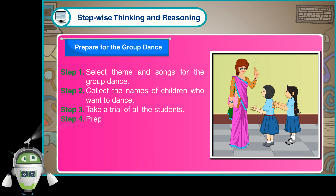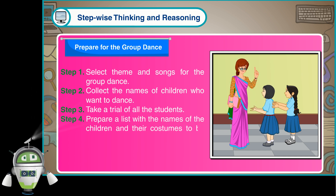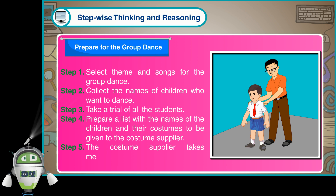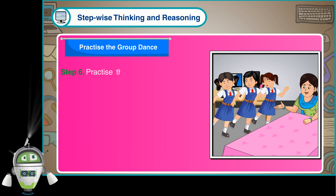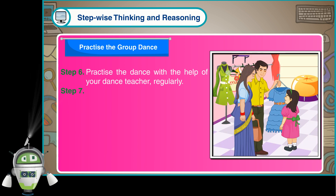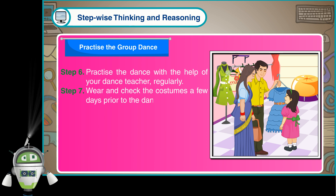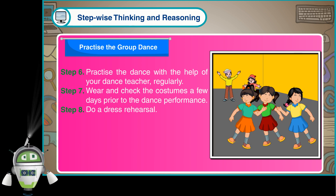Step 4: Prepare a list with the names of the children and their costumes to be given to the costume supplier. Step 5: The costume supplier takes measurements for the costumes of children. Practice the group dance. Step 6: Practice the dance with the help of your dance teacher regularly. Step 7: Wear and check the costumes a few days prior to the dance performance.